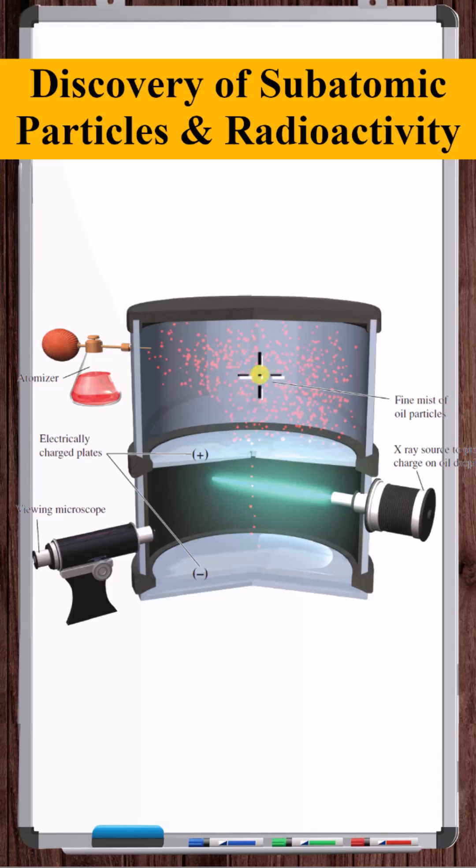This fine mist of oil particles gravitates downward. Some go through a hole to this bottom chamber, where there is an electric field precisely controlled by these two plates. An x-ray source turns the particles into charged particles, and by observing the way these charged particles interact with the electric field, the charge of the electron was determined. And with the charge-to-mass ratio, the mass of the electron was determined.